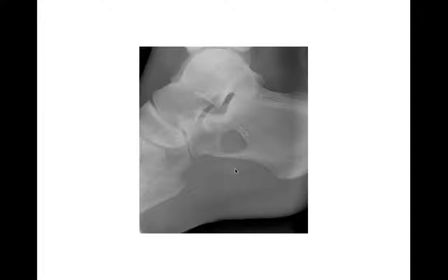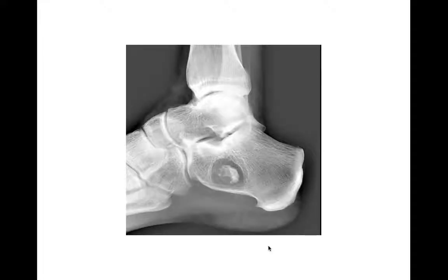If you see something like this, it's most likely a unicameral bone cyst, though it could still be an anterior interosseous lipoma. Interosseous lipomas tend to have a central calcification in the middle of the lesion — sometimes quite large. If you see that, it's an interosseous lipoma and you're done. If you don't see it, give a differential, but it doesn't really matter since both options are benign.